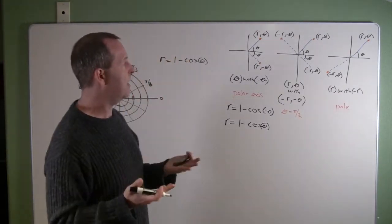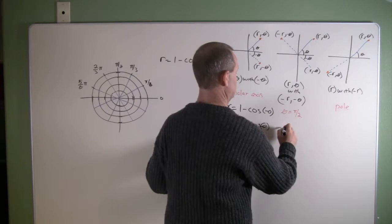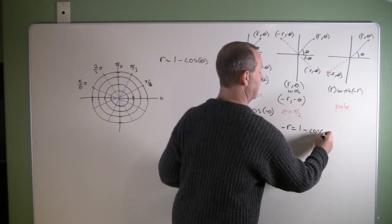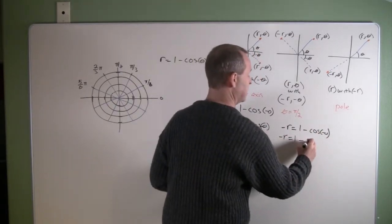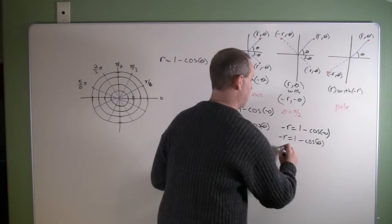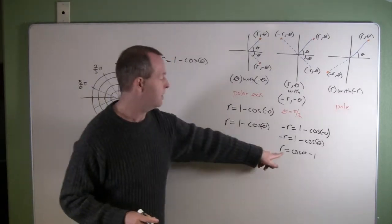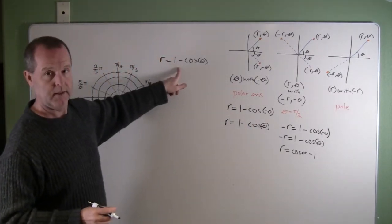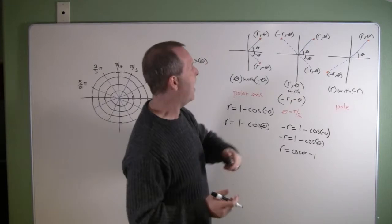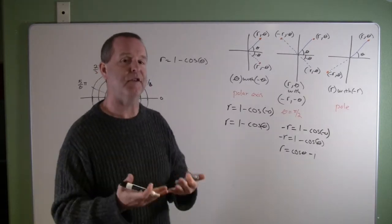All right, let's look at the second idea for symmetry. We're going to replace r and theta with negative r and negative theta. So I have negative r equals 1 minus cosine of negative theta. Let's work that out. Negative r equals 1 minus cosine of theta, because remember cosine is an even function. Solve that for r. r equals cosine theta minus 1. This equation is not the same equation. So we may not have symmetry about the y-axis or the theta equals pi over 2. We might have symmetry. We don't know. We can't say for sure that we do.